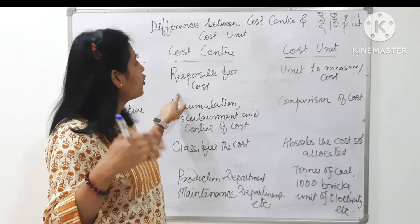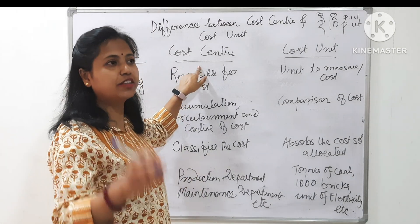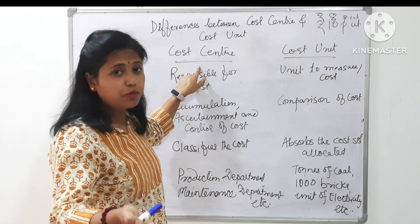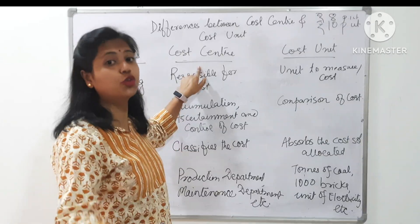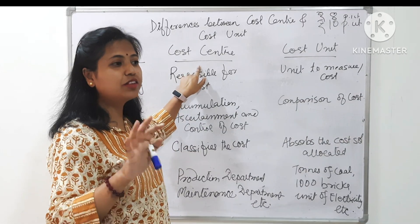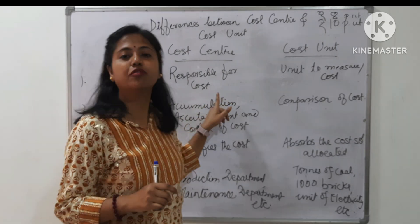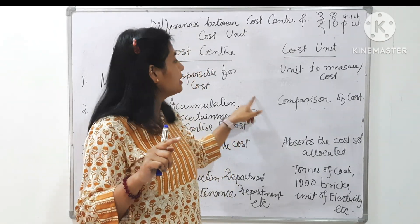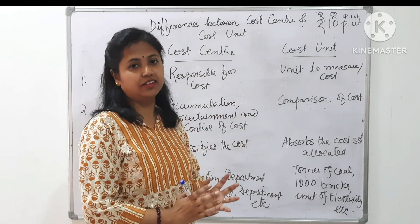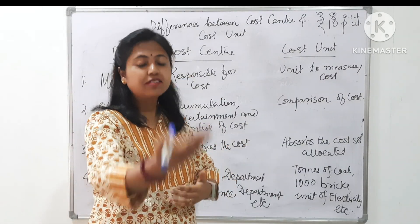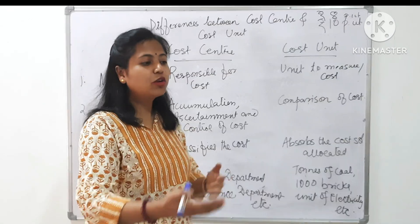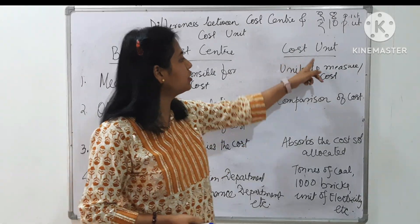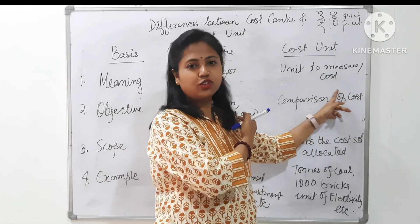First, meaning. You remember in the last video we saw that a cost center is that unit, segment, or division of a department which is responsible for cost — responsible for controlling the cost. This is the center which is responsible for cost. Whereas the cost allocated to the center has to be expressed in terms of some units, because we want to recover that cost in terms of some units.